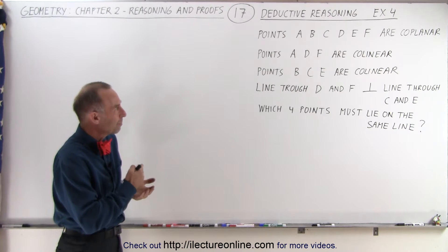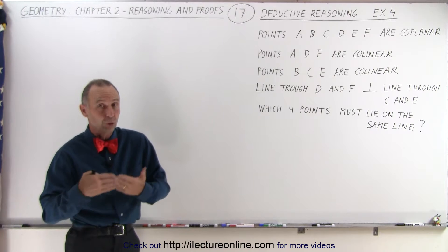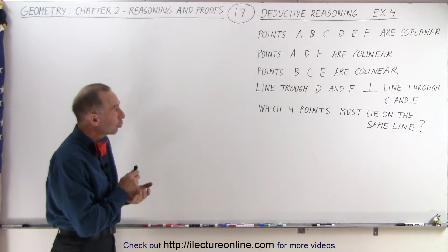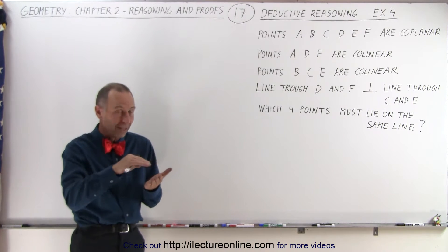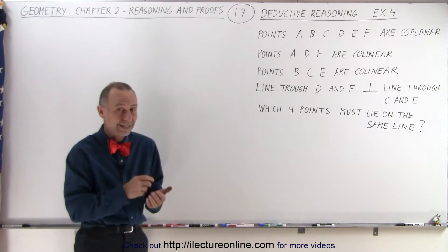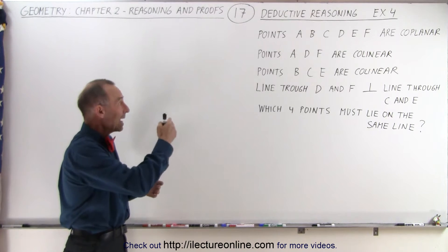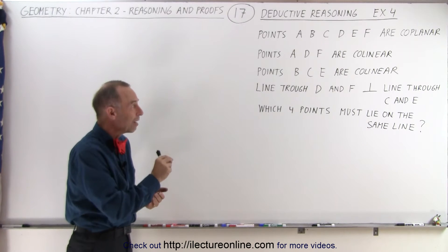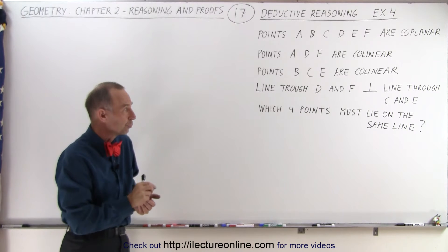We're given six points — A, B, C, D, E, and F — and they're all coplanar, so we need to understand what coplanar means. It means they all lie on the same plane. We're told that points A, D, and F are collinear, so those three points are on the same line. Also, points B, C, and E are collinear, so B, C, and E are on the same line as well, not necessarily on the same line as A, D, and F. And then we're told that the line drawn through D and F is perpendicular to the line drawn through C and E.